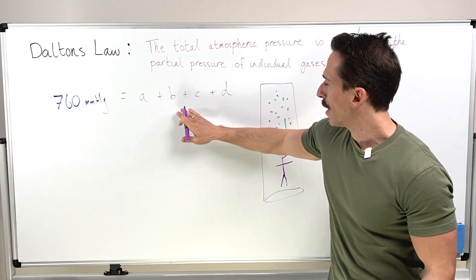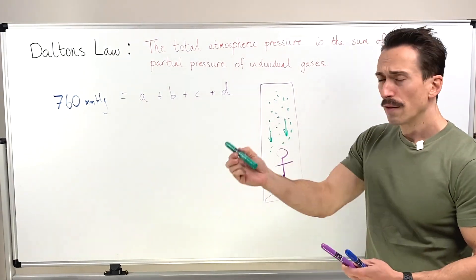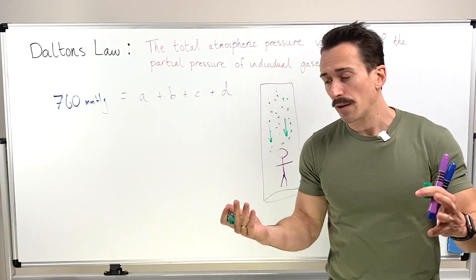We just need to know what's A, what's B, what's C, what's D. Let's take a look. First of all, let's look at the most abundant gas that's in the atmosphere around us.